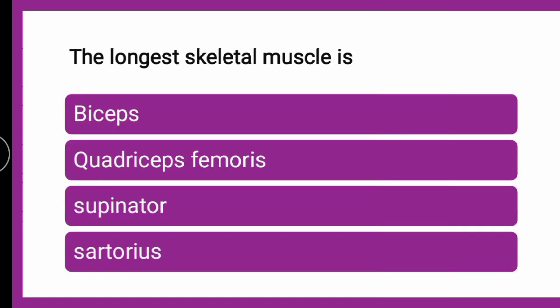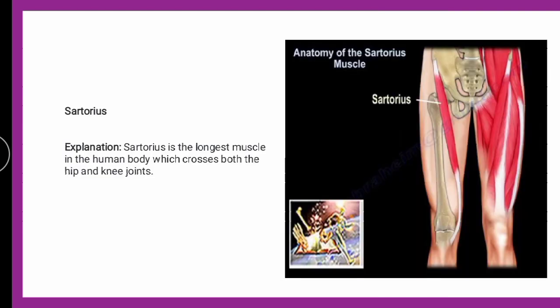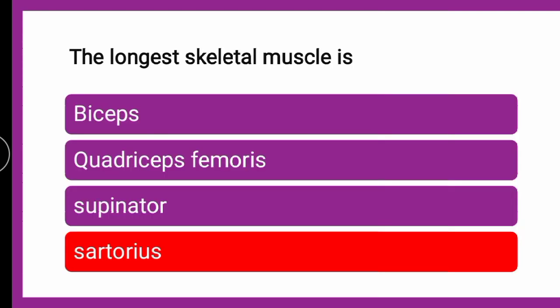The next question is: the longest skeletal muscle is dash — whether it is bicep, quadriceps femoris, supinator, or sartorius. From the image, the longest skeletal muscle is sartorius — the longest muscle in the human body, joining the hip and knee joints. So the correct answer is sartorius — the longest skeletal muscle.